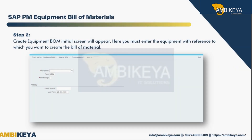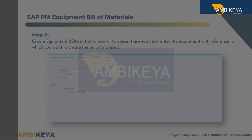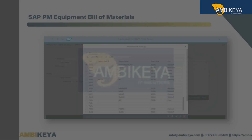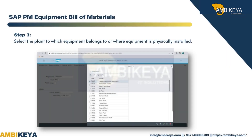Step 2 — The Create Equipment BOM initial screen will appear. Here you must enter the equipment with reference to which you want to create the bill of material. Step 3 — Select the plant to which the equipment belongs or where the equipment is physically installed.